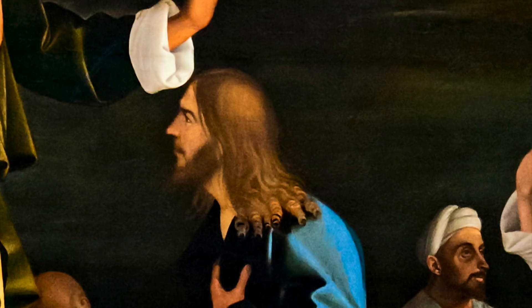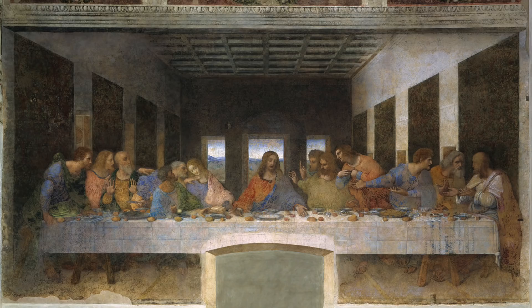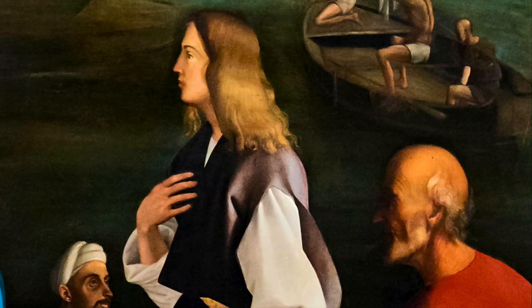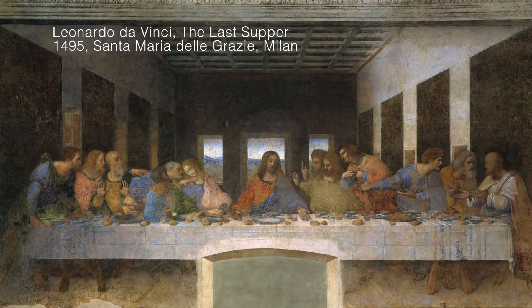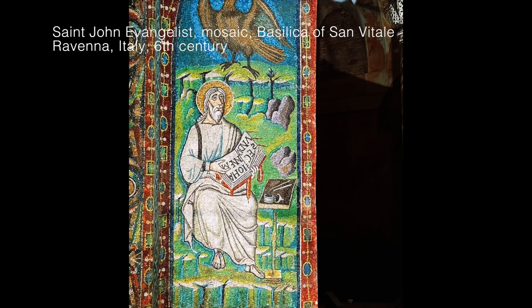Behind James we have the figure of John, the future Evangelist, who puts his hand on his heart — a gesture we sometimes also find in representations of the Last Supper. In the western tradition John was represented as a beardless young man, as in this painting. In the East, on the contrary, he was pictured as an old man, bald with a long white beard, so this is very much a western representation.